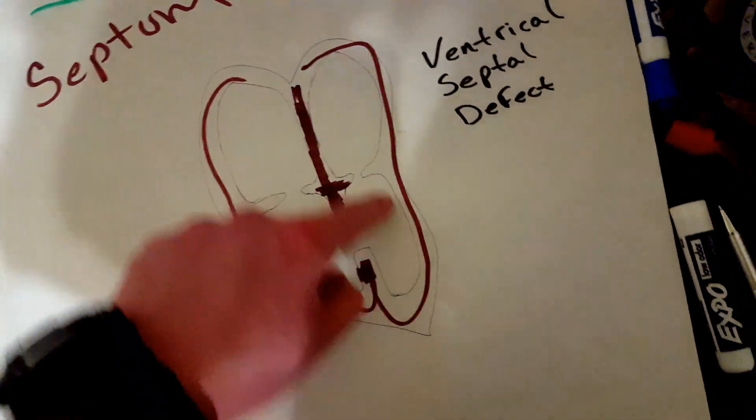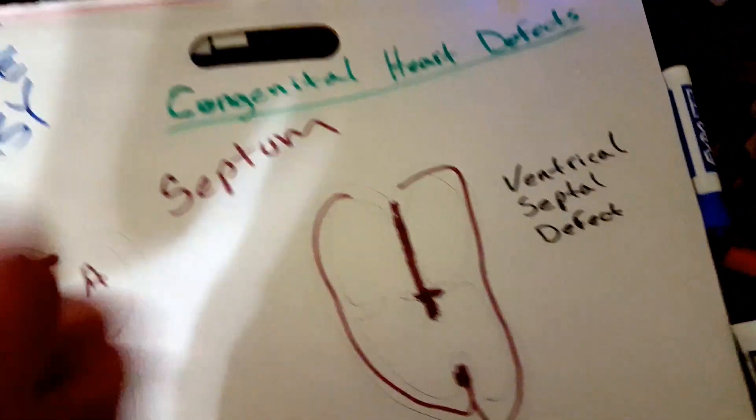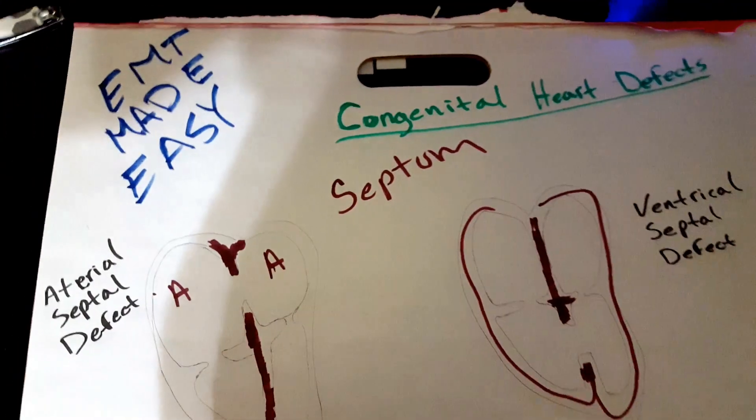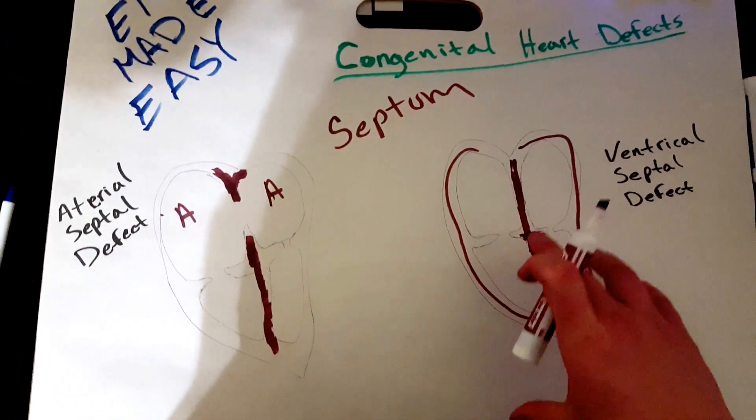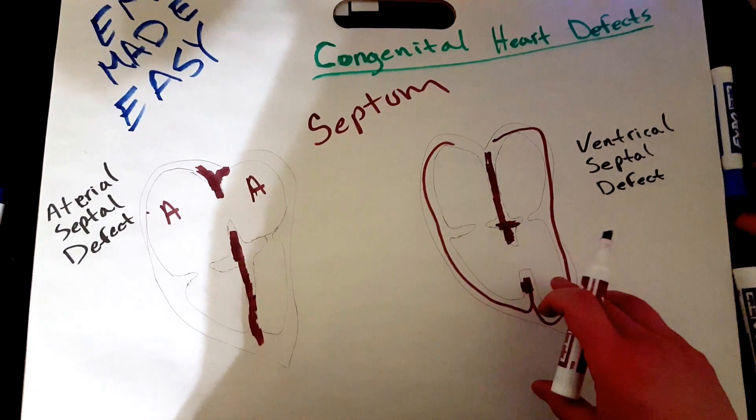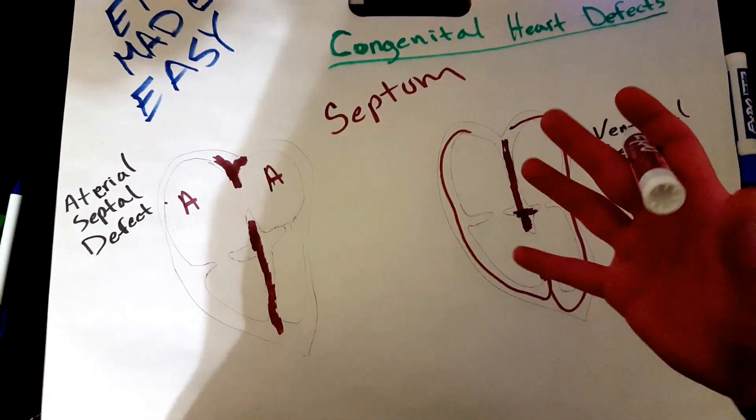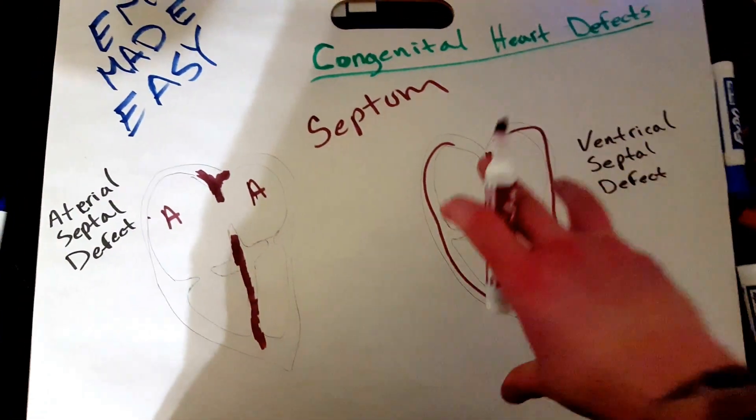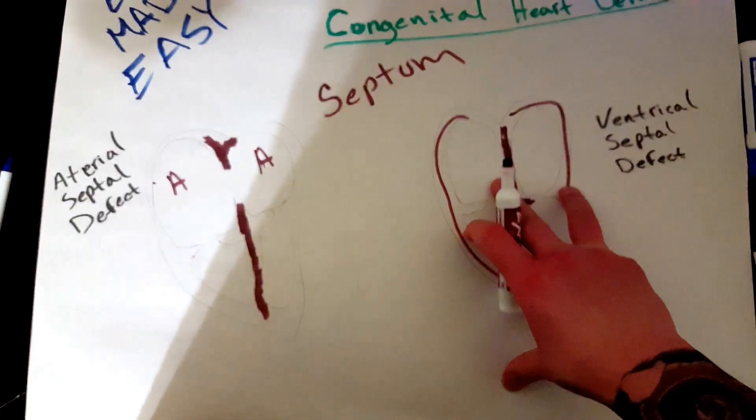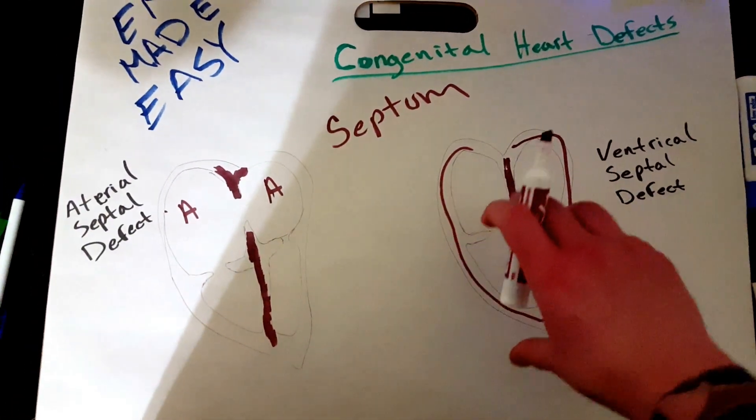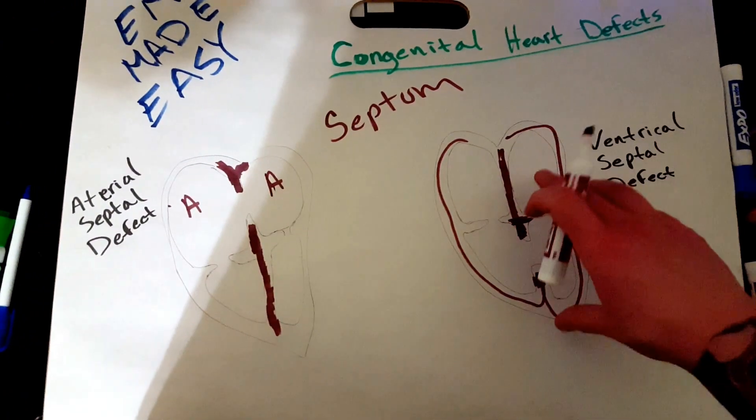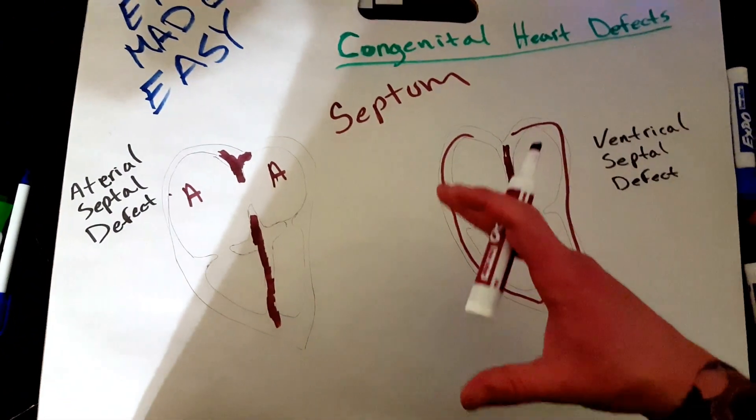It's the heart and the septum. Got it? Good. So, I'm going to discuss the three most common ones that you will find out there. Obviously, as an EMT, you don't have to really know in depth about this, but you are tested on these right here. So, that's why I'm going to cover them.